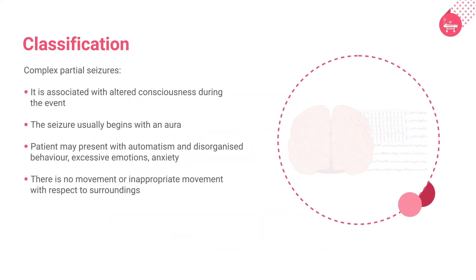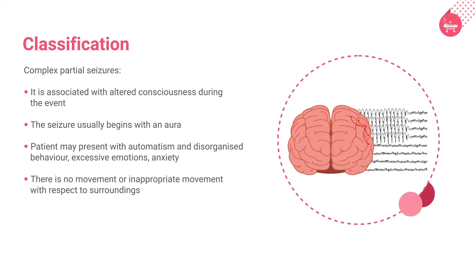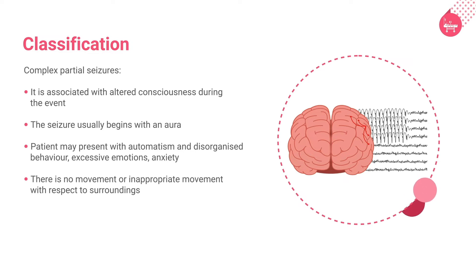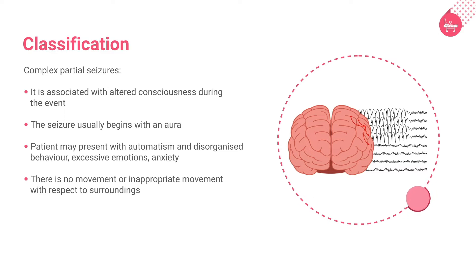The second category under partial seizures is complex partial seizures. A simple partial seizure followed by altered consciousness with or without automatisms is considered a complex partial seizure. The seizure usually begins with an aura, and the patient may present with disorganized and purposeless behavior with excessive emotions and anxiety.